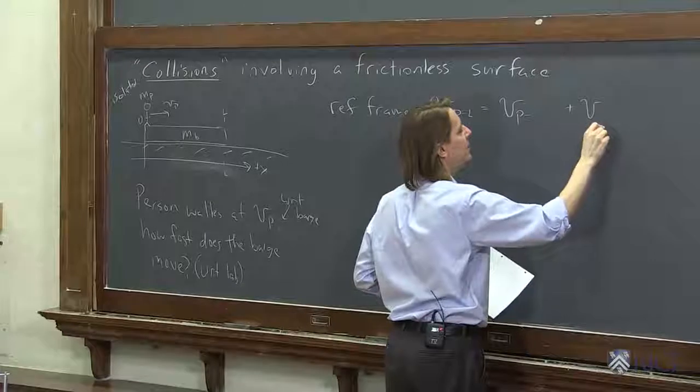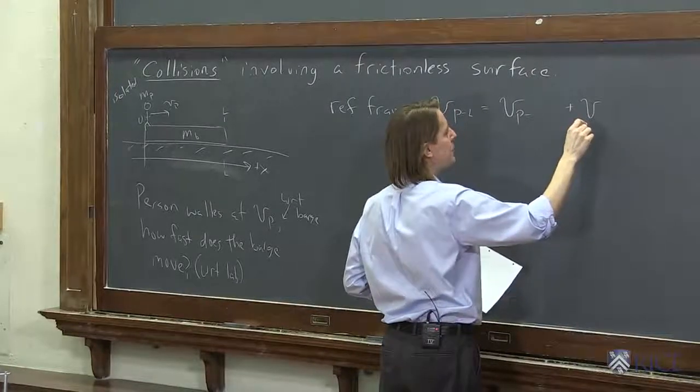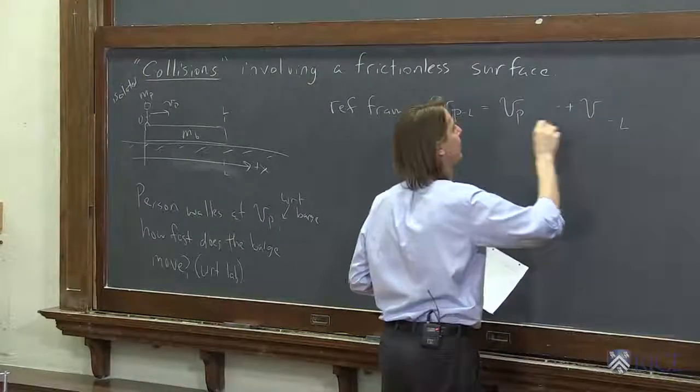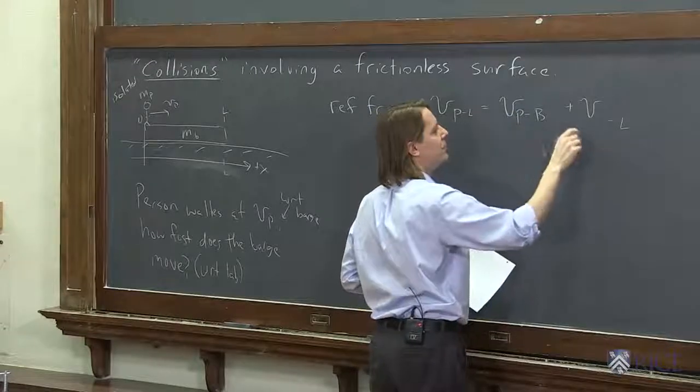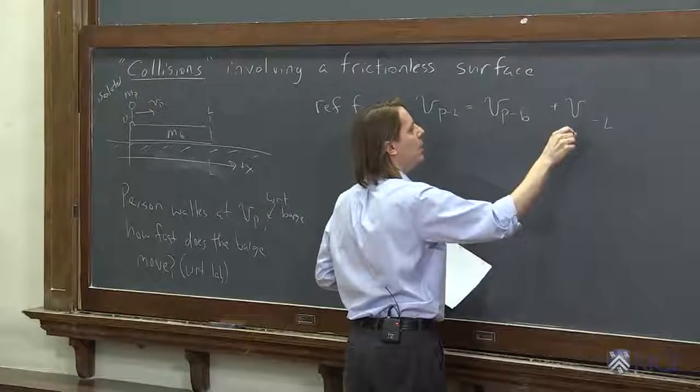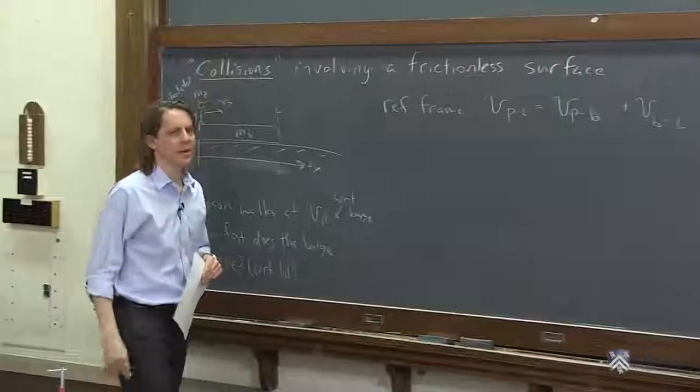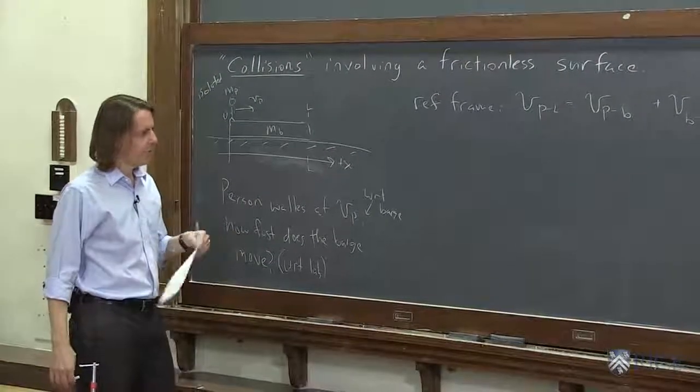Remember you just say it's the velocity of the person in some frame, plus the velocity of that thing in the lab frame. So that's the barge, the person in the barge frame, and the velocity of the barge in the lab frame. So if you write it like that, it'll always come out right.